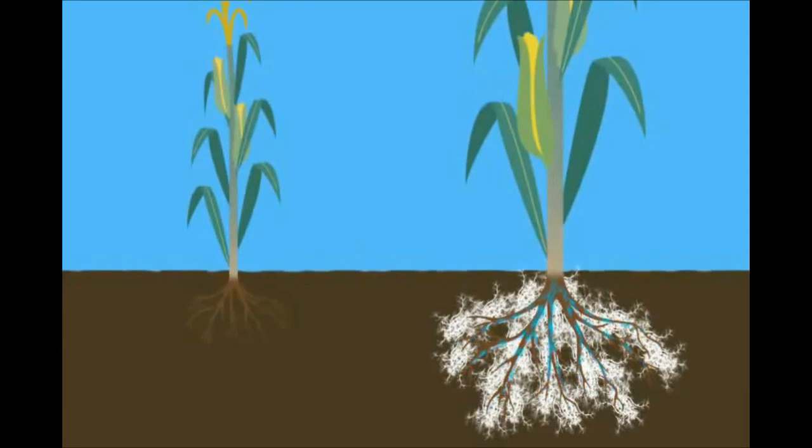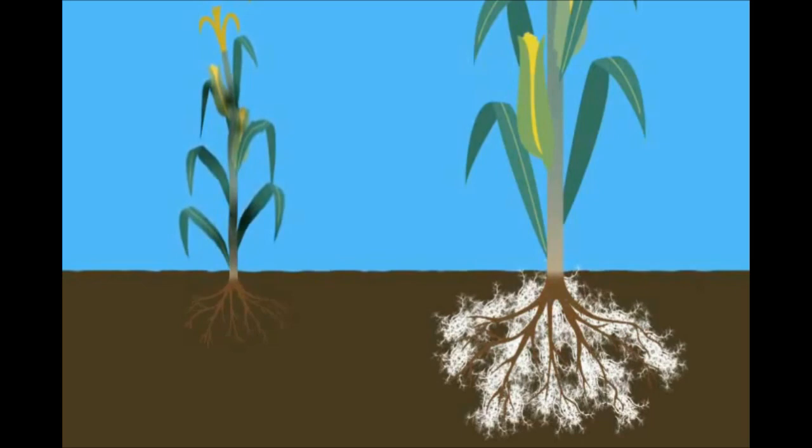Mycorrhizal fungi act like a sponge beneath the soil surface. The crop benefits from increased access to soil moisture and protection against drought.